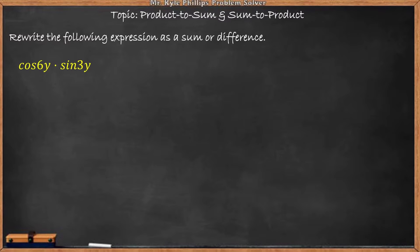Here we have cosine 6y times sine of 3y. You could really think about this as cosine of A times sine of B.